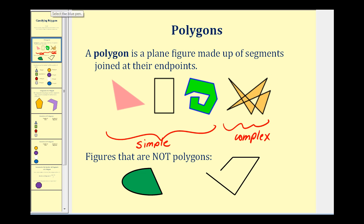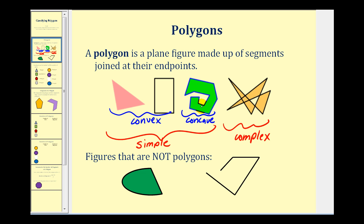There were also two classifications of simple polygons: convex polygons and concave polygons. Convex polygons have all diagonals inside the polygon. A concave polygon has some diagonals outside the polygon — you can also think of it as two or more sides caving in to the interior of the polygon.